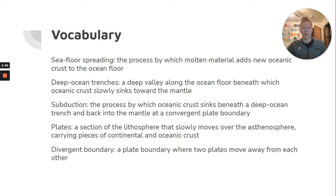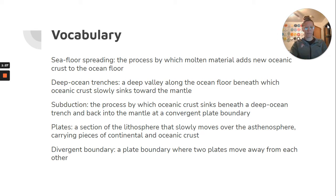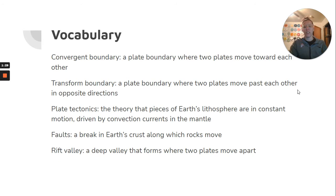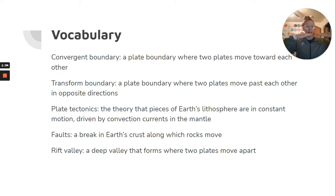A divergent plate boundary is where two plates move away from each other. Convergent is where two plates move toward each other. And transform is when they move past each other in opposite directions. Plate tectonics is the theory that pieces of the lithosphere are in constant motion, driven by convection currents in the mantle.